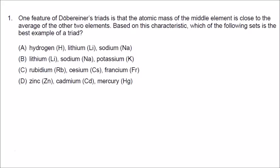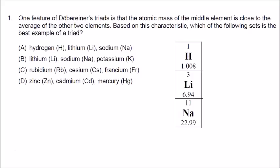Starting with hydrogen, lithium, and sodium: we take the mass of hydrogen and the mass of sodium and take the average. The average of 1 and 23 is 12. But since lithium does not have a mass close to 12, we can rule out A as a possible choice.